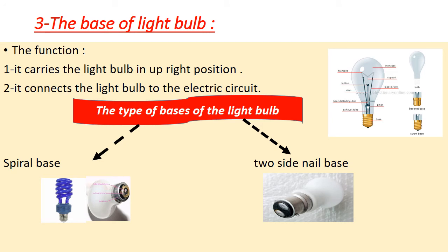Number three, the base of the light bulb. The function of the base is to carry the light bulb in an upright position and connect the light bulb to the electric current. There are two types of base: one called spiral base and two called two-side nail base. The spiral base consists of one piece of lid to connect the lamp to the electric circuit. The two-side nail base consists of two side nails and two pieces of lead to connect the lamp to the electric circuit.